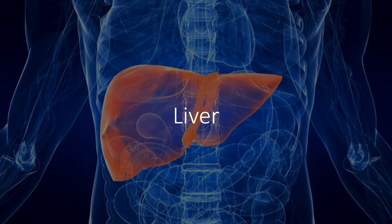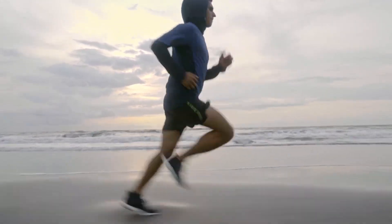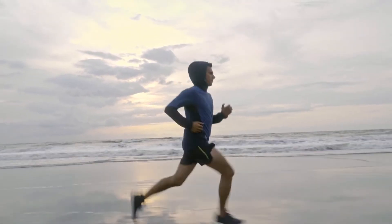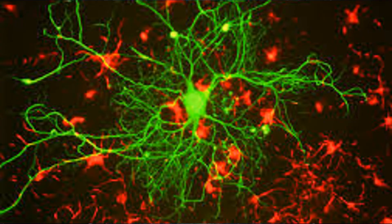The Chinese medicine liver represents the function of moving Qi and regulating emotions. There is some degree of overlap with the nervous system, especially the autonomic nervous system.